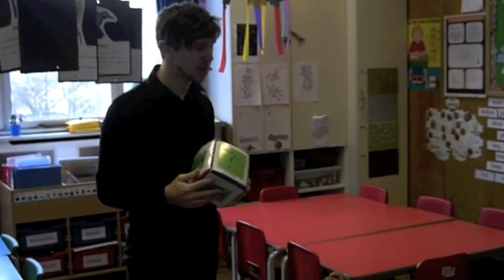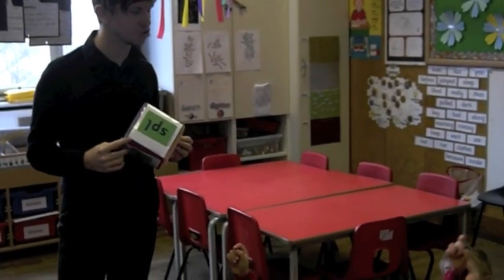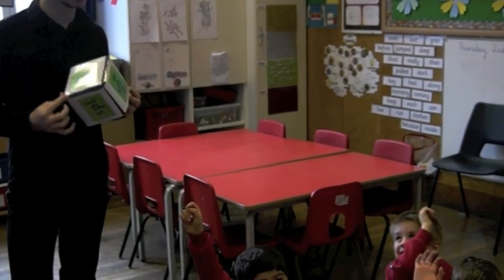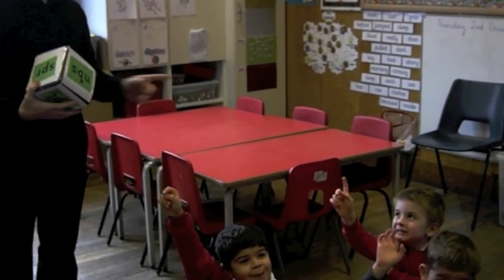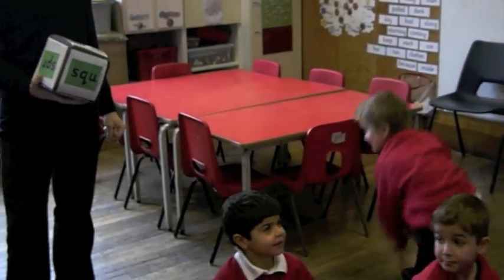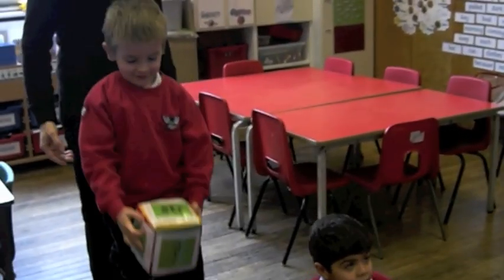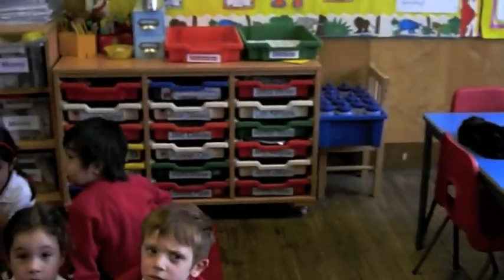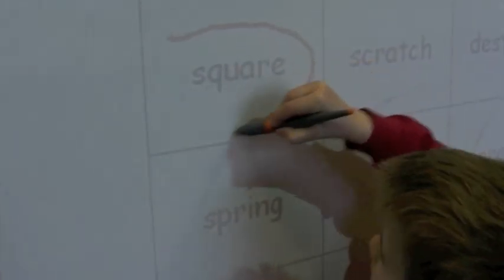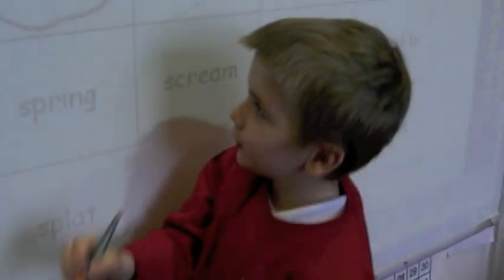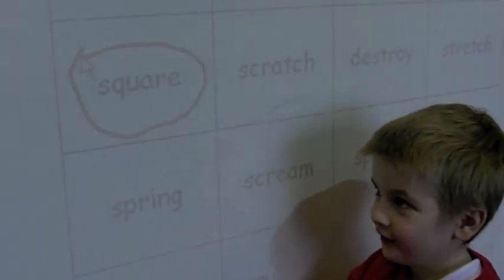Who would like to roll the blends dice — the triple blends dice? Rowan. Roll the dice. Go and find a 'squ' word and put a circle around it — put a ring around a 'squ' word. What word have you chosen, Rowan? Square. Square. Good boy.